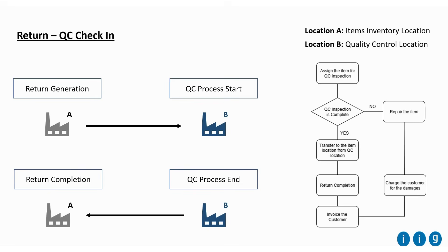If you talk about the QC check-in process, which happens once the item is returned back to us — once we generate the return entry, the item will be located in the designated location. After that, once we start the process similar to the previous one, it will move back to the QC location. Then once it is completed, the item will be moved to the designated location again.